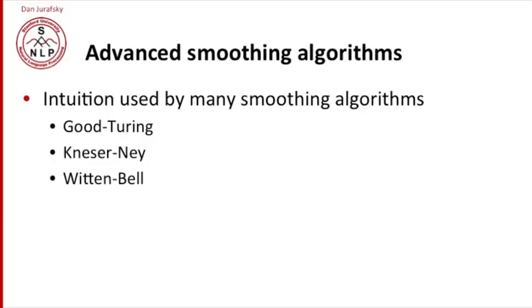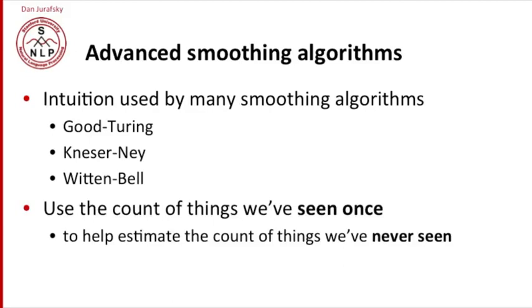Instead, the intuition used by many smoothing algorithms — Good Turing, Kneser-Ney, and Witten-Bell smoothing — is to use the count of things we've seen once to estimate the count of things we've never seen. The goal is to replace those unseen zeros with something else. All these algorithms say: look at things you've seen once; those are just like things you haven't seen yet but will see once in the test set.